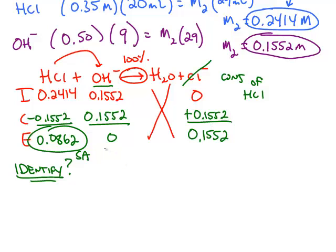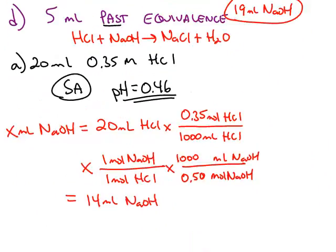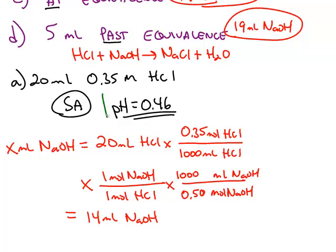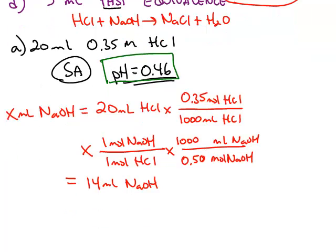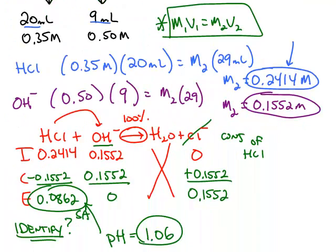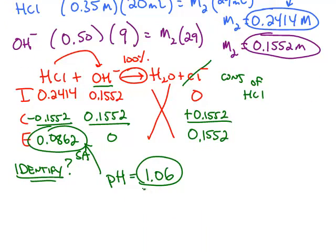So this question is now, how do you find the pH of 0.0862 molar hydrochloric acid? And we know how to calculate the pH of a strong acid. This pH works out to be 1.06. Notice, before we started titrating, point A, our pH was more acidic, 0.46. Point B, we dumped in 9 mL of a strong base and the pH goes up. Didn't go up very much, because we still have a lot of acid left.